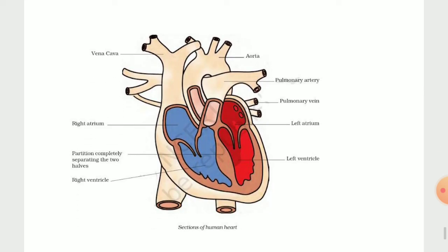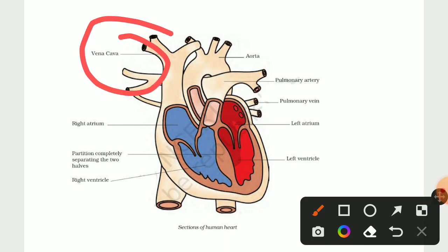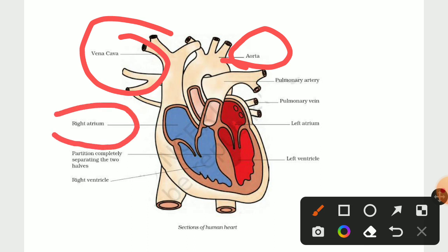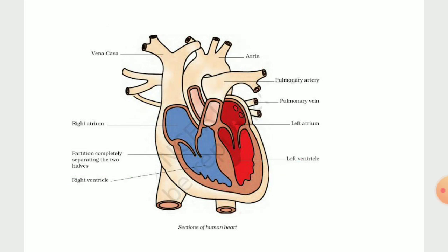Now let's see the image of the heart. This is the whole image of the heart. You can see the vena cava — the biggest vein — and the aorta — the biggest artery. The upper chambers are the right atrium and left atrium. The lower chambers are the right ventricle and left ventricle.